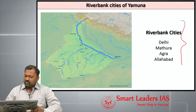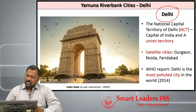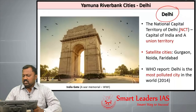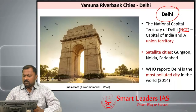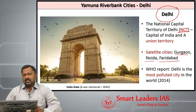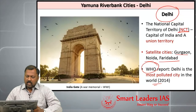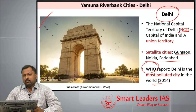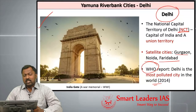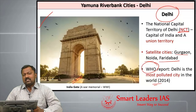The important cities on the banks of river Yamuna are Delhi, Mathura, Agra, and Allahabad. Starting with Delhi — Delhi is the National Capital Territory of India, also called NCT, and it is a union territory. There are many satellite cities around Delhi: Gurgaon, Noida, and Faridabad. According to a WHO report, Delhi is the most polluted city in the world. India Gate is a war memorial built for soldiers who sacrificed their lives in World War I.